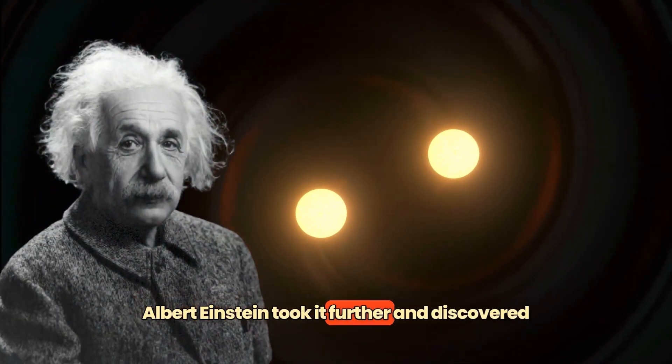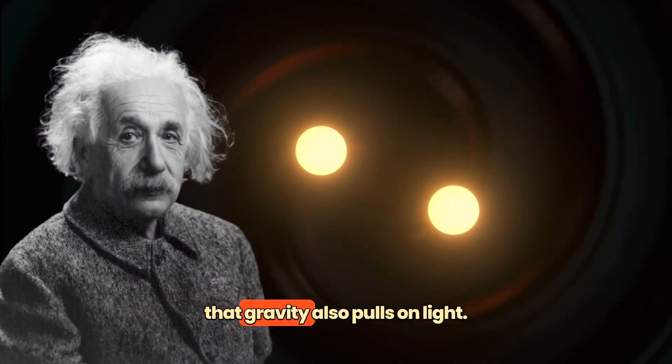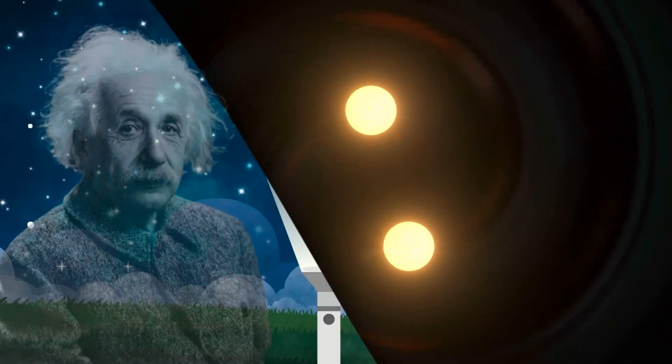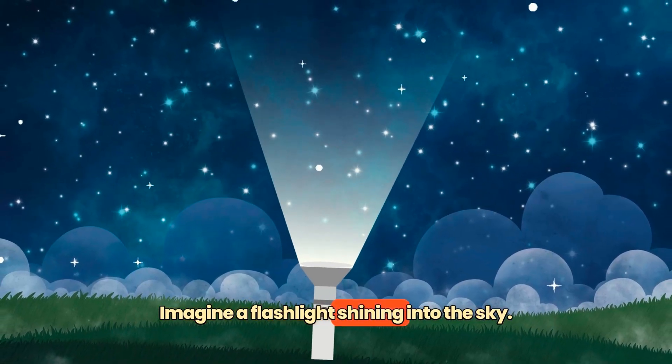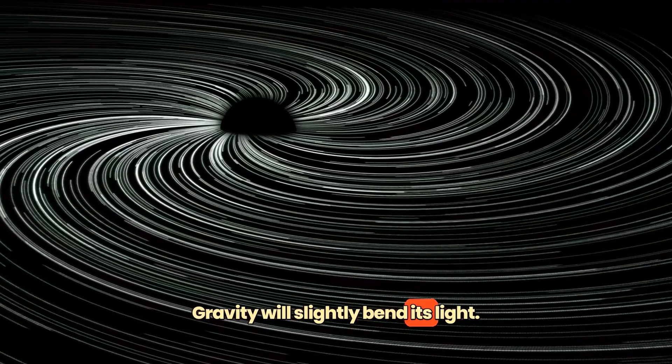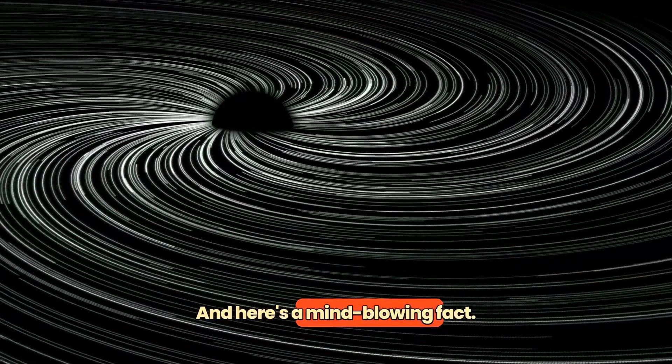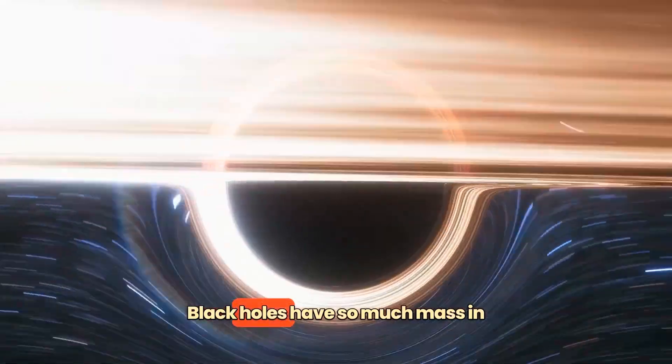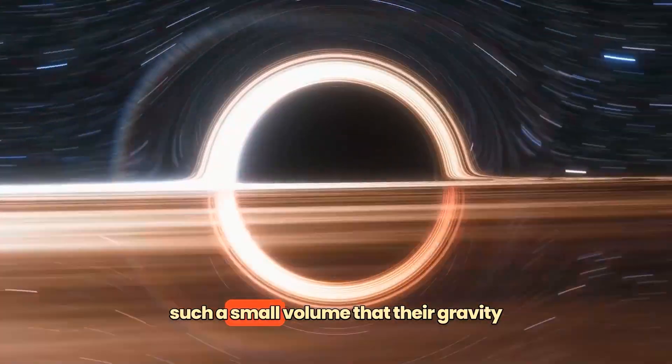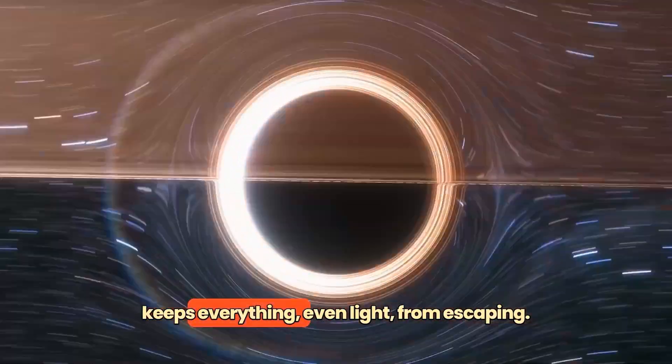Albert Einstein took it further and discovered that gravity also pulls on light. Imagine a flashlight shining into the sky. Gravity will slightly bend its light. And here's a mind-blowing fact. Black holes have so much mass in such a small volume that their gravity keeps everything, even light, from escaping.